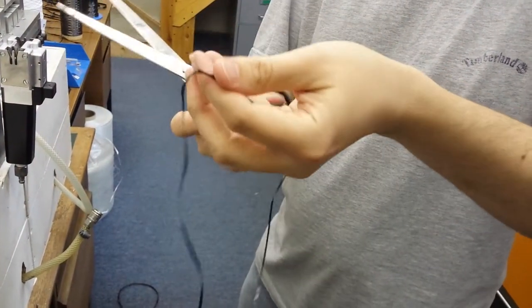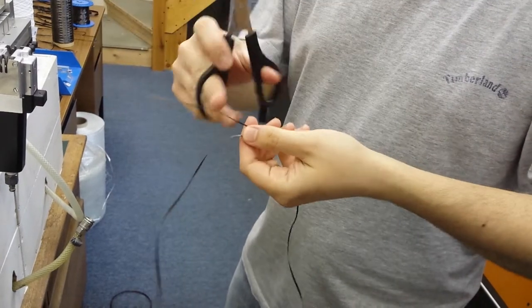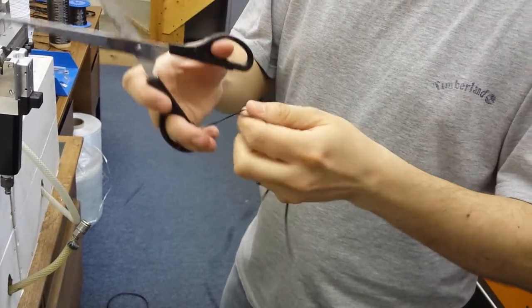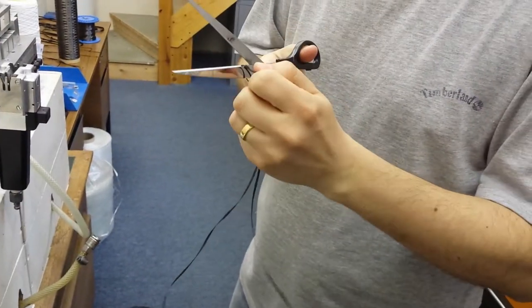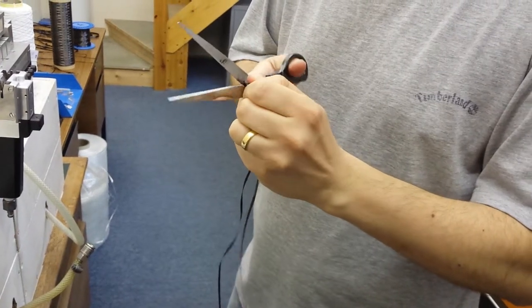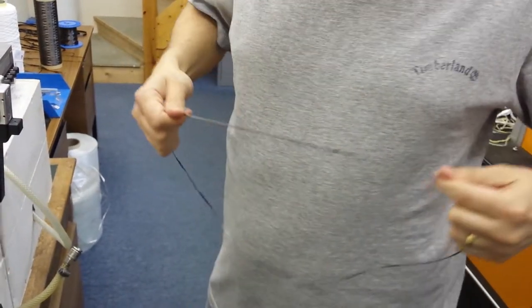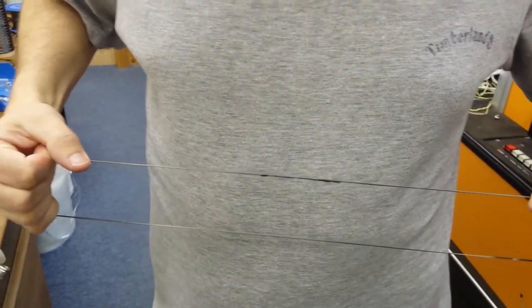So you trim away the tail ends, and as you can see, you get a very neat, strong splice.